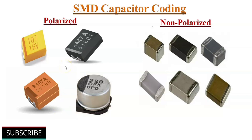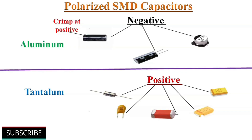Tantalum and aluminum electrolytic SMD capacitors are polarized. Great care must be taken to observe the polarity marking on their case before inserting them in a circuit. Ceramic SMD capacitors are non-polarized, so they can be connected in any direction. For aluminum electrolytic capacitors, the stripe marking indicates the negative lead, while the stripe on a tantalum capacitor indicates the positive connection.